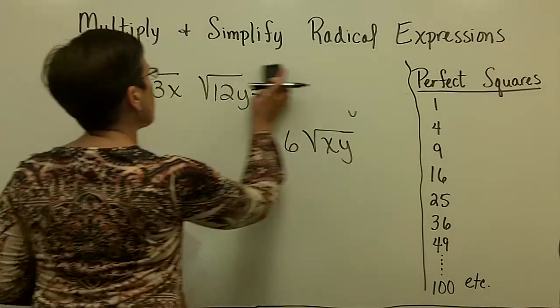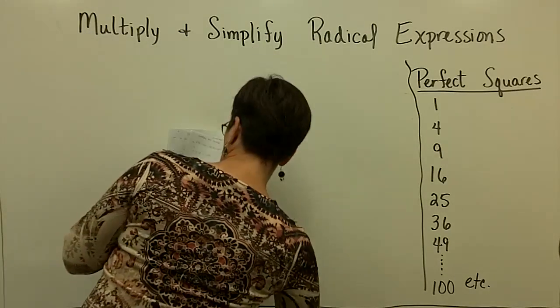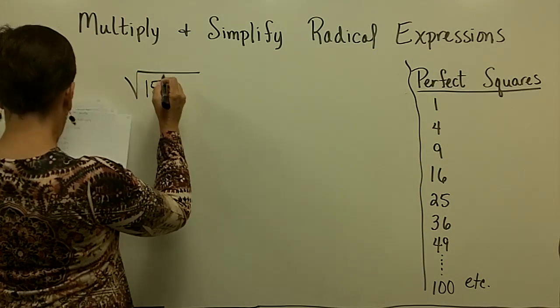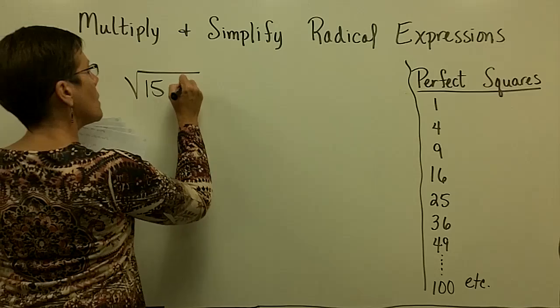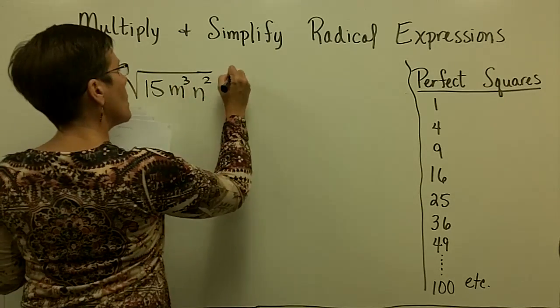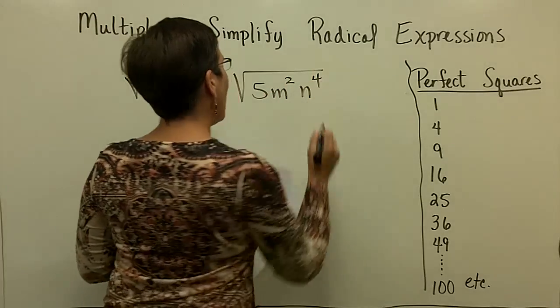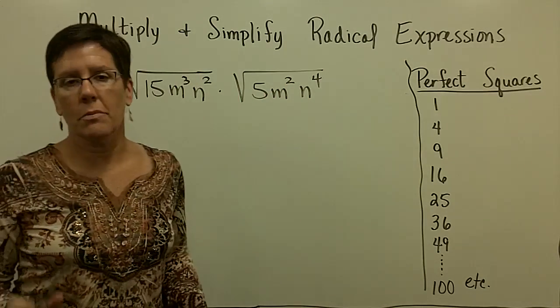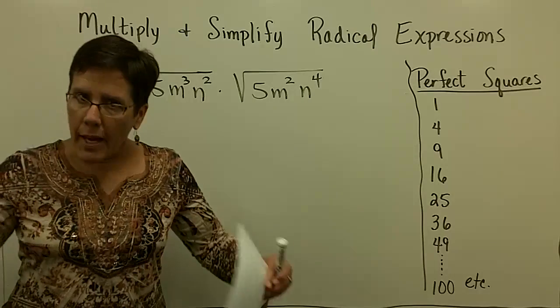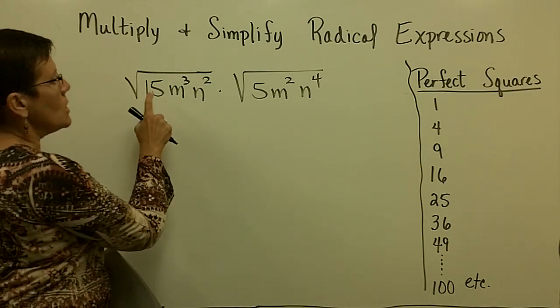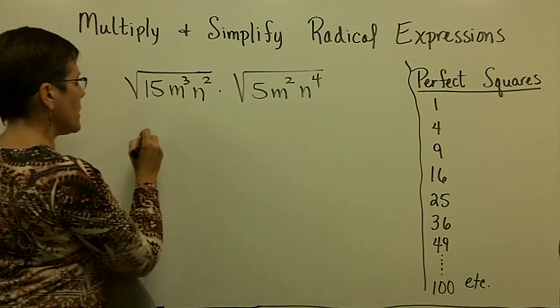But this last one that I have for this multiplying and simplifying. I'm just so inclined to multiply these together and then go about the process of simplifying. So I'm inclined to do that first. So 15 times 5 is 75.